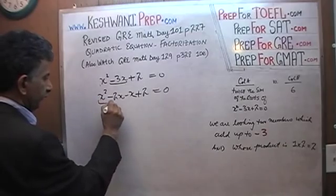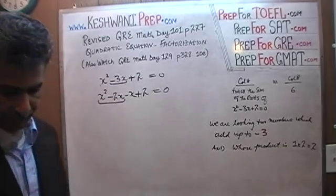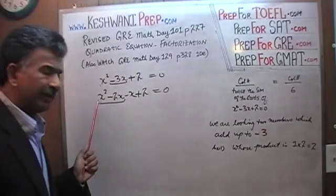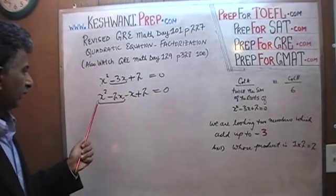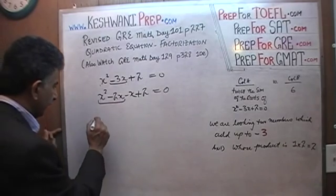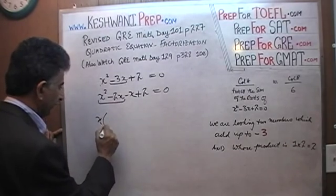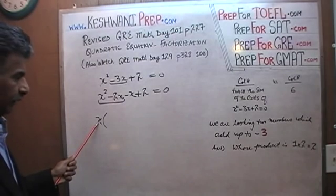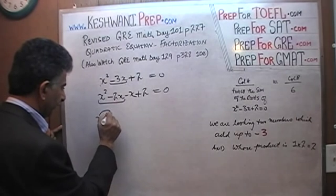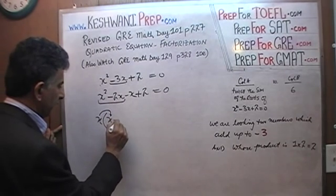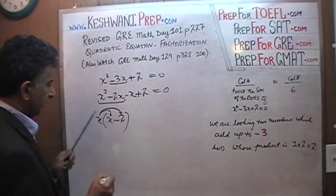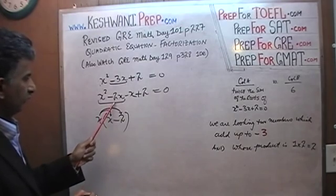Now look at the first two terms: x² − 2x. The common factor is x. Taking x out, we get x(x − 2). That's because x × x = x² and x × (−2) = −2x.